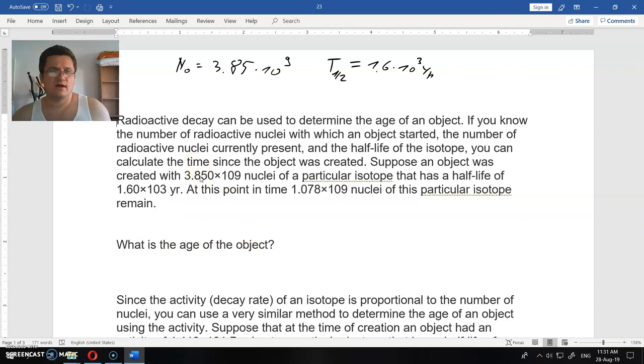Now we have N = 1.078 × 10⁹ nuclei. And what is the time? What is the age of the object? This is the number of nuclei that we started with. Half-life, what does it mean?